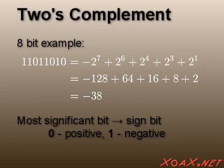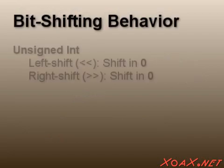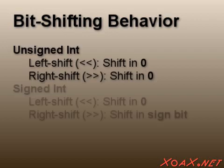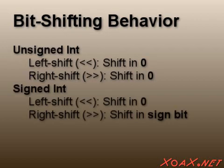This is called the 2's complement representation. To summarize: unsigned integer types shift in zeros for both left and right shifts, while signed integer types shift in a zero for left shifts and a copy of the sign bit for right shifts.